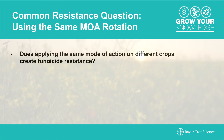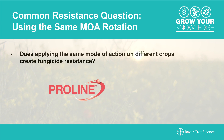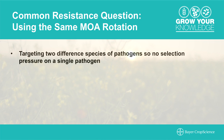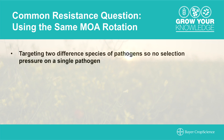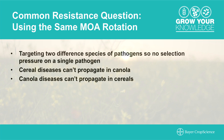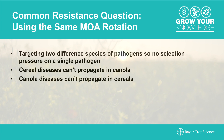Another common question: does applying the same mode of action year-over-year on different crops select for resistant pathogens? For instance, applying Proline on canola in year one and then Procero on cereals in year two — should you be concerned? Basically, the answer is no, because you're targeting two different species of pathogens year-over-year and not placing selection pressure on a single pathogen species. Cereal diseases can't propagate in canola, and canola diseases can't propagate in cereals — your canola can't get fusarium head blight and your cereals can't get sclerotinia.